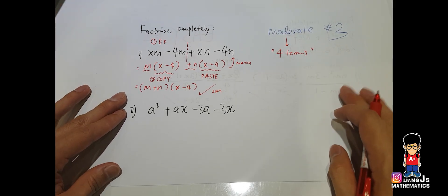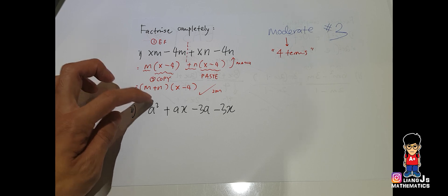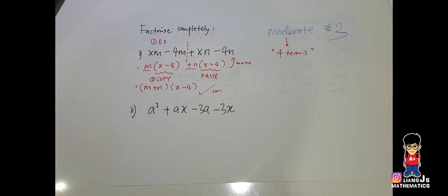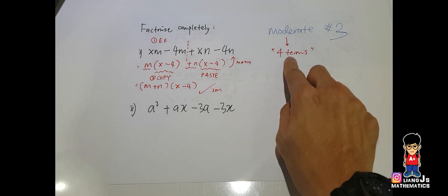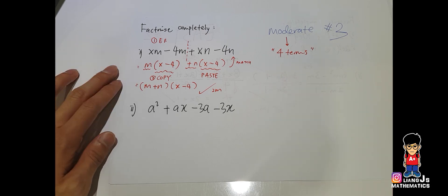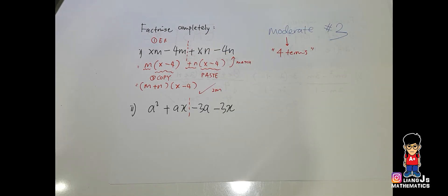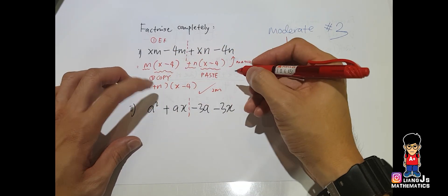Why don't we try one more time? ax squared plus ax minus 3a minus 3x. Again, four terms. And again, the steps work this way where you have to cut it off, next apply easy factorization.